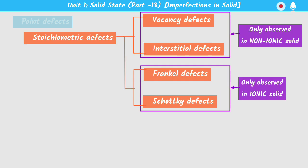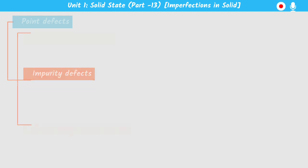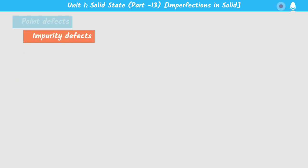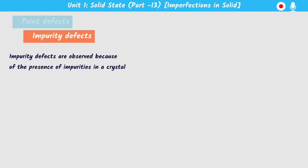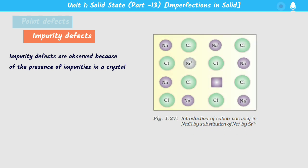Interestingly, silver bromide can exhibit both Schottky defects and Frenkel defects. These are all about stoichiometric defects. Now we are going to discuss the second type, which is known as impurity defects. Impurity defects are observed because of the presence of some impurity in a crystal.